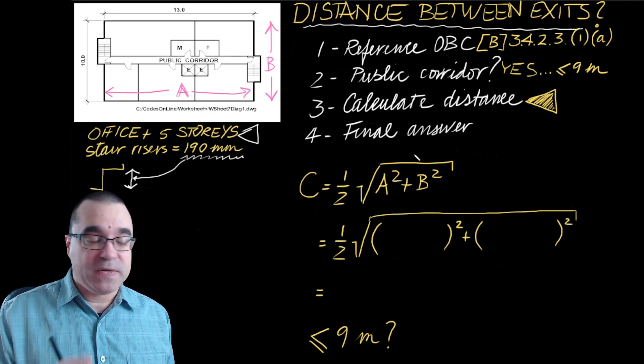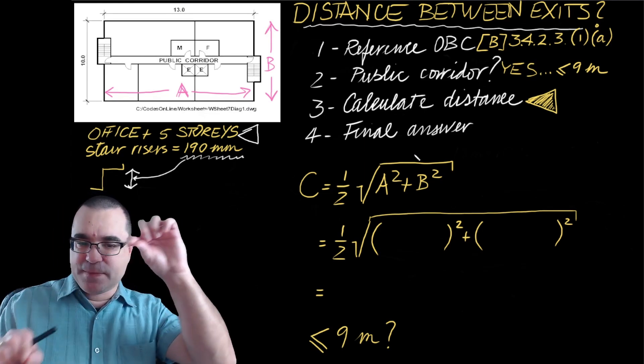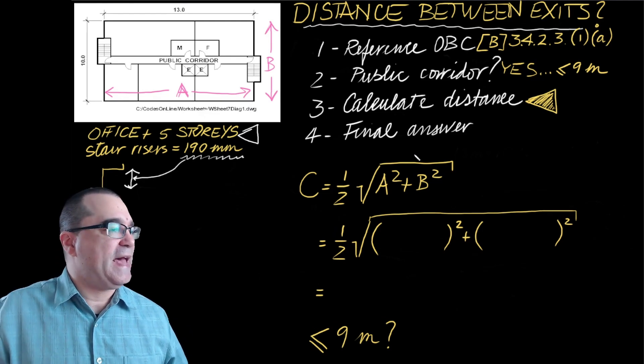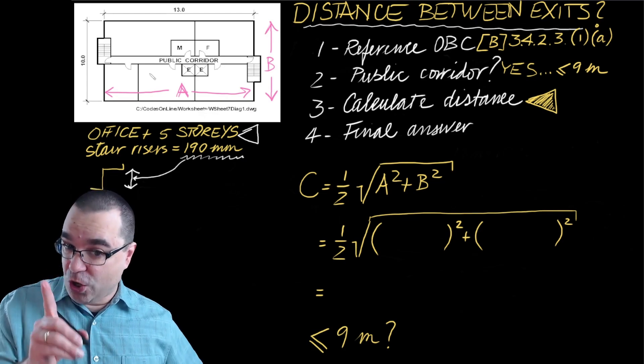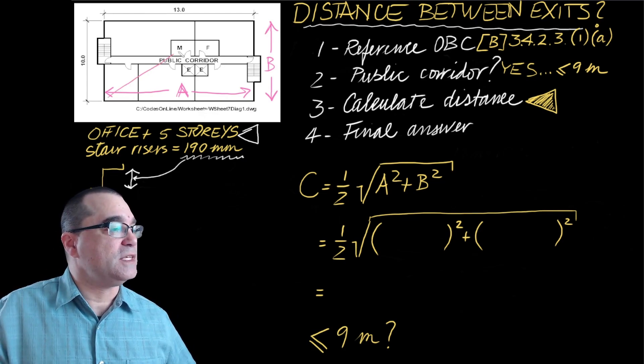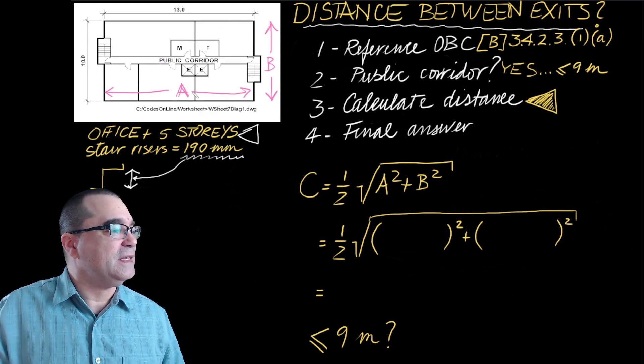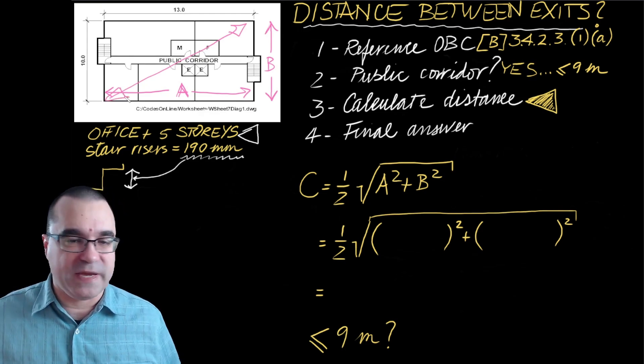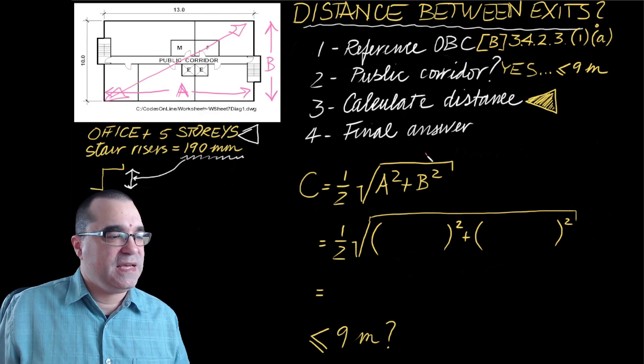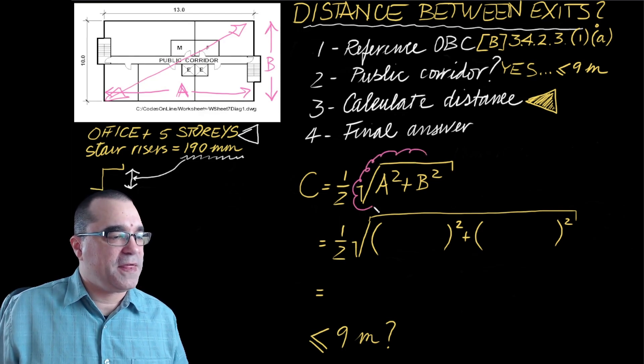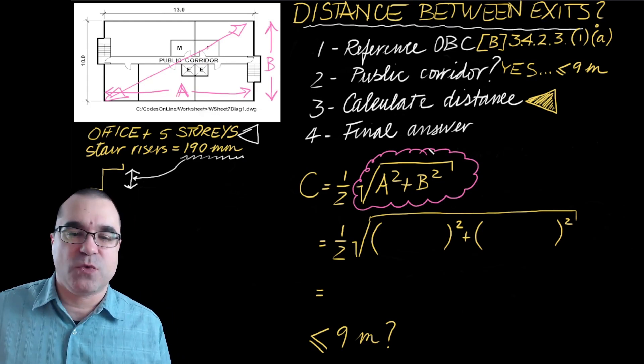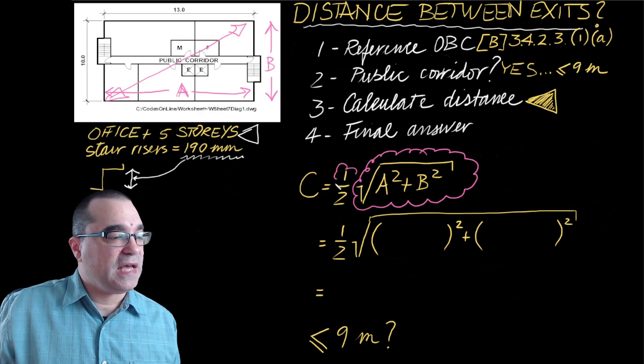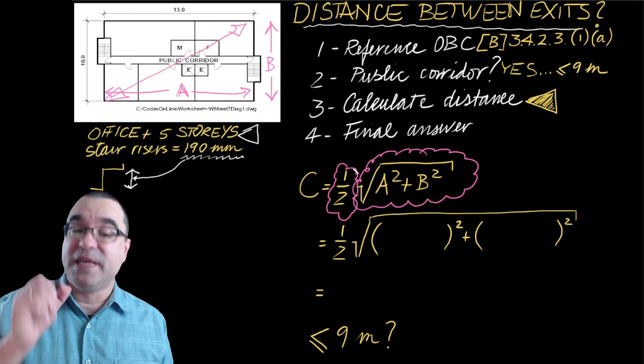Now for step number three, we have to calculate the minimum distance between exits. The minimum distance is based on this diagonal distance, the maximum diagonal distance for the floor plan. That maximum diagonal distance is determined by using Pythagorean theorem: the square root of A squared plus B squared.